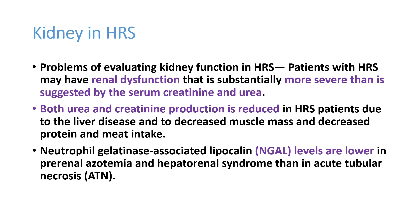In hepatorenal syndrome, the kidneys are actually normal. Hypoperfusion produces renal damage, but it is transient — if splanchnic circulation improves, the kidneys can return to normal. However, the severity does not correlate well with creatinine or urea elevation, because both urea and creatinine production are reduced due to chronic liver disease, decreased muscle mass, and decreased protein intake.